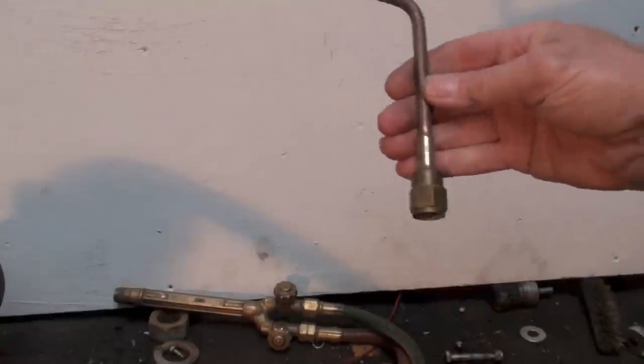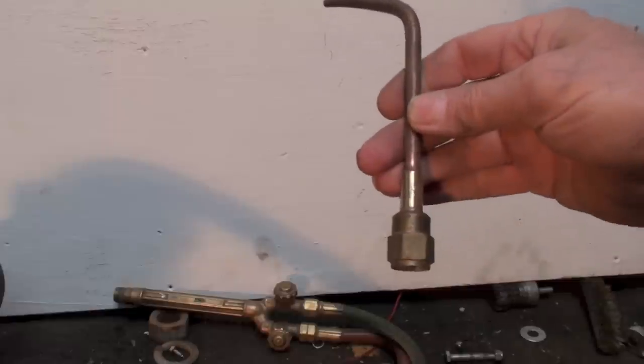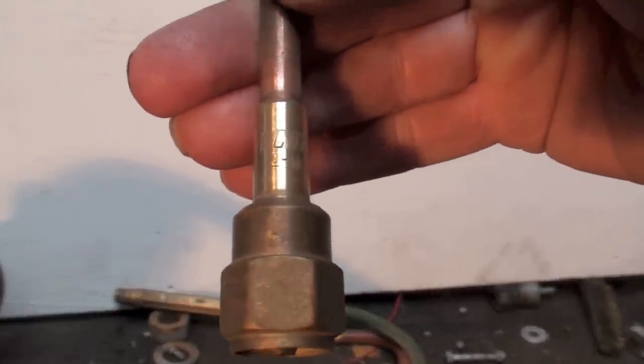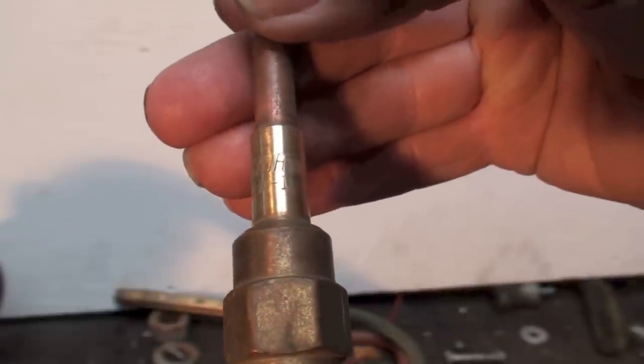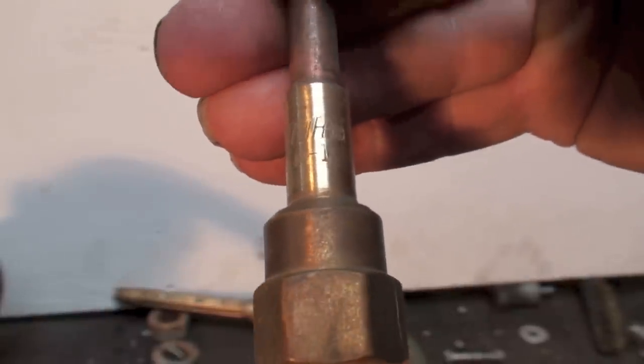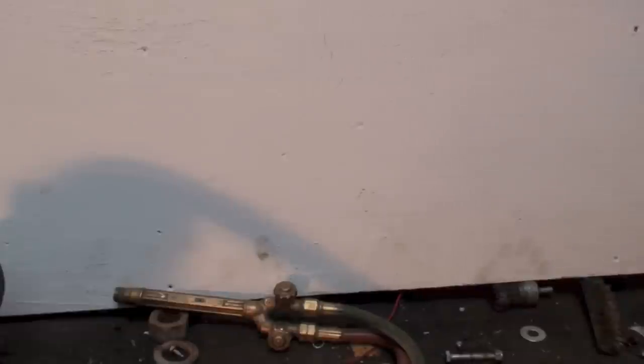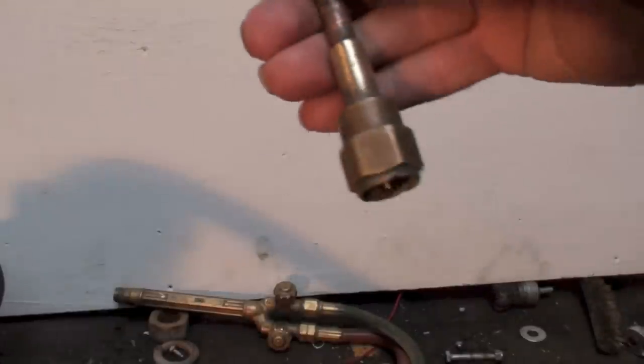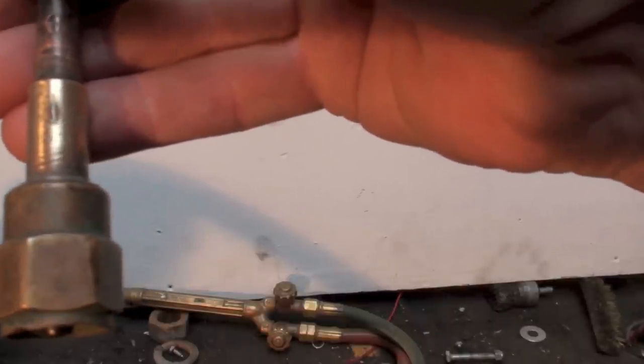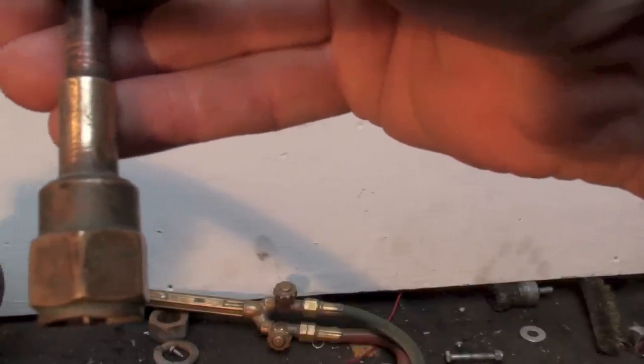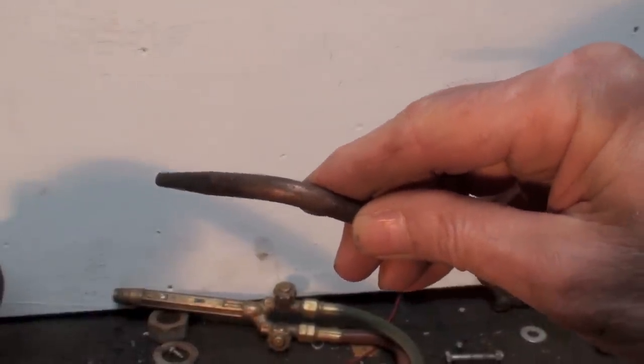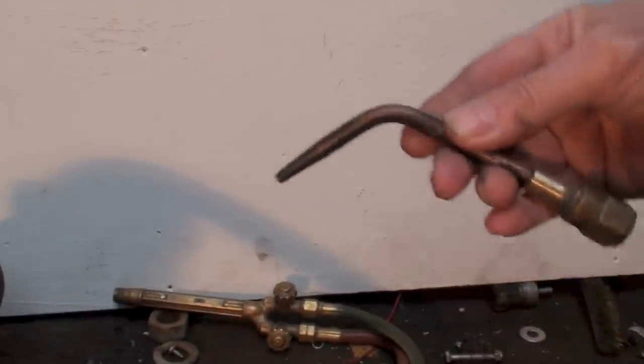Now one of the things I want you to look at are these tips. If you look close, you can see this is 2W1. That's a number 2 tip. This one here says 1W1. That's number 1 tip. Number 1 tip smaller, number 2, and this is what usually comes with these things.